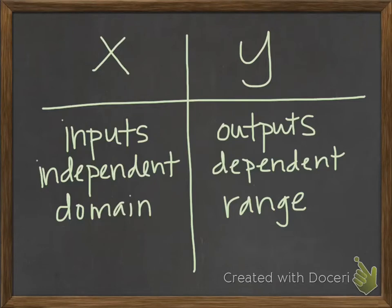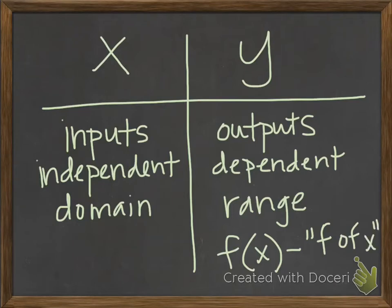So the new part is when we have a relation that is also a function, we can actually, instead of y as a variable, we can write it as f of x. I need you to know how to say this, f of x. This does not mean f times x. This f of x is the name of the function.